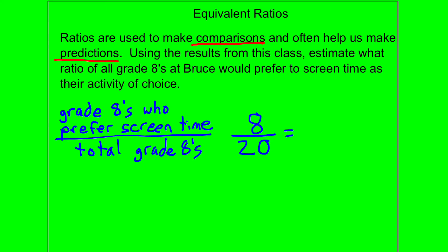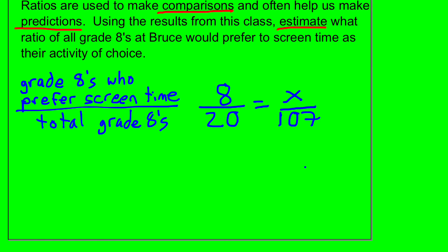We'll make another ratio. The total number of grade 8s at Bruce Middle School, if everyone showed up, would be 107. We want to figure out — or make a prediction, which we'll call X — how many of those grade 8s would prefer screen time. Because we're asked to do an estimate, I'm going to use easier numbers: 8 over 20 is approximately X over 100, rounding off 107 to 100.